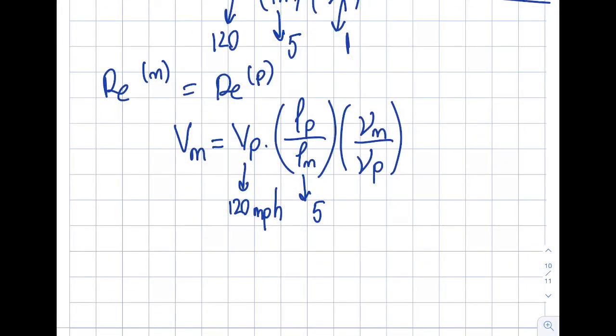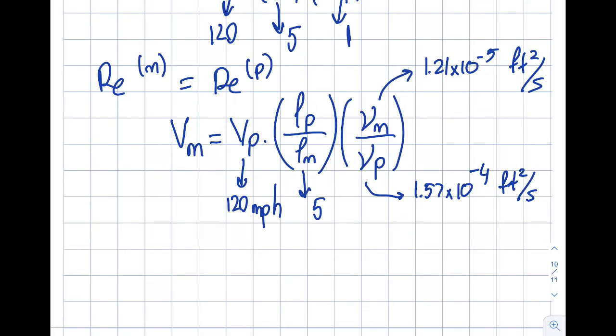Let's insert the values. Kinematic viscosity of water is 1.21×10⁻⁵ feet squared per second. Kinematic viscosity of air is 1.57×10⁻⁴ feet squared per second. Punching these into your calculator gives Vm equals 46.2 miles per hour.